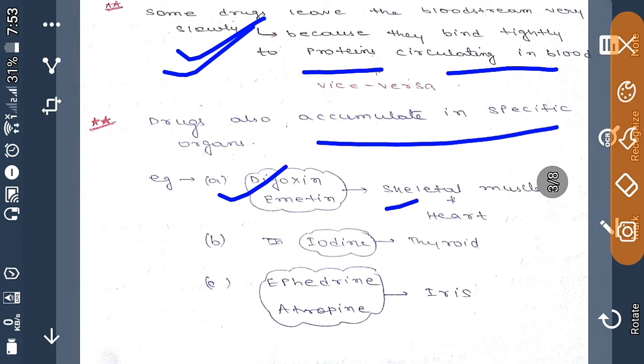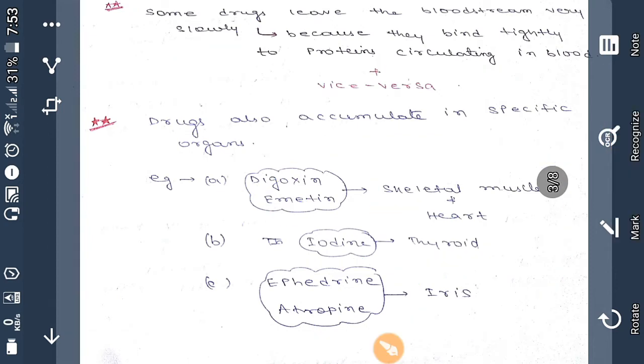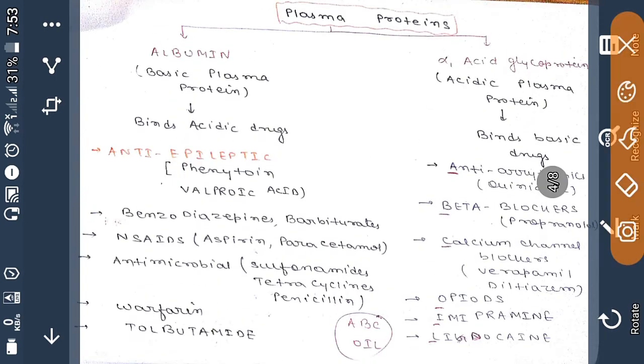Some drugs also accumulate in a specific organ. Examples are digoxin and emetine, which accumulate in skeletal muscle and heart; iodine accumulates in thyroid gland; and atropine accumulates in iris. These tissues have a special affinity for these types of drugs.